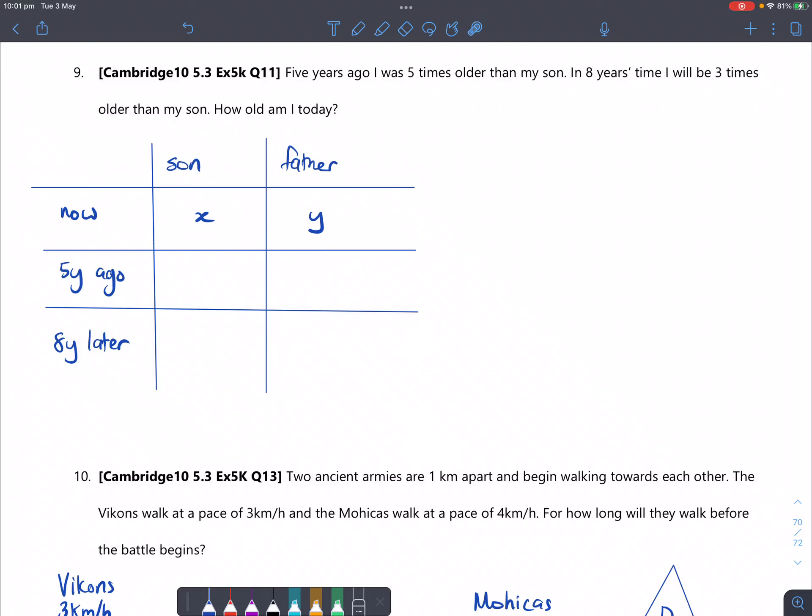For question 9, five years ago I was five times older than my son. In eight years time I'll be three times older than my son. How old am I today?